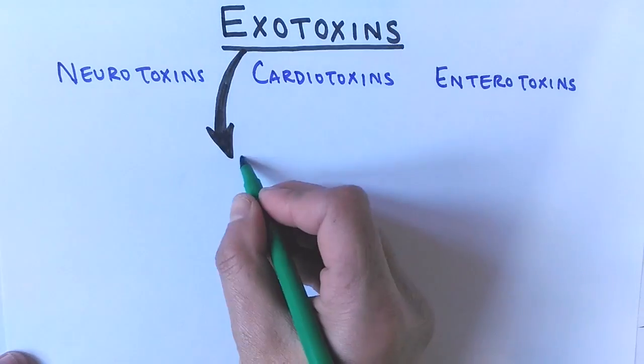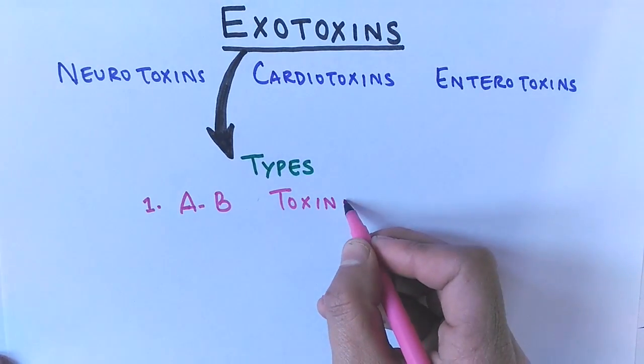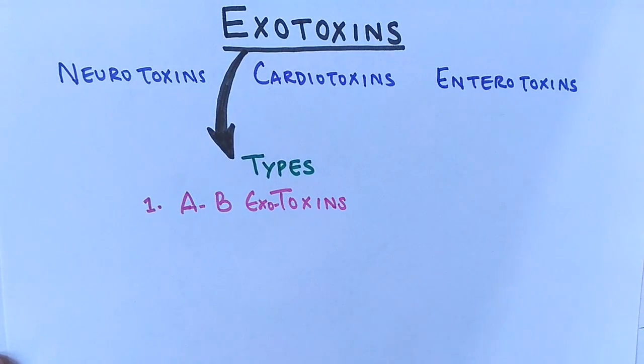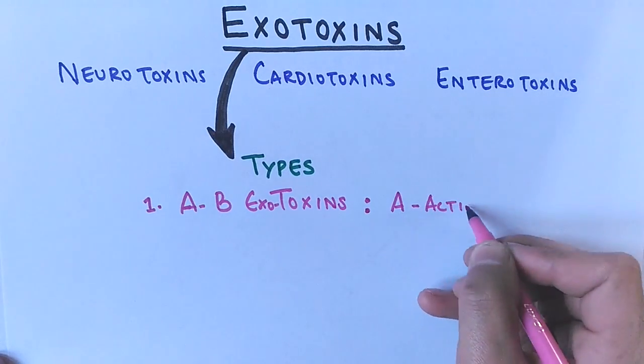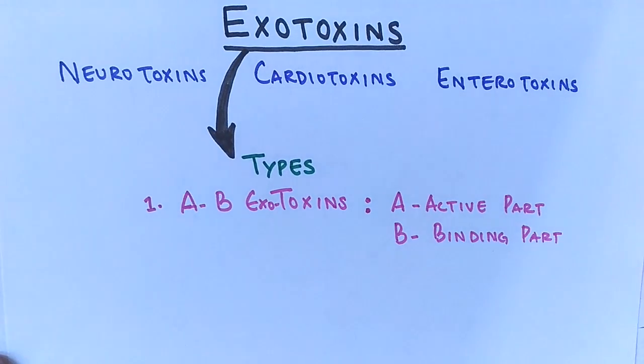Then we see the types of exotoxins. First, the most important exotoxin is called AB exotoxin. It's called AB because it has two parts: A is the active enzymatic part, and B is the binding part that helps the exotoxin get inside the host cell.